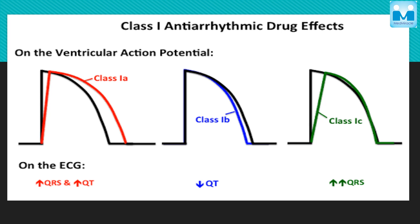This is what I was talking about — the class 1 anti-arrhythmics and the changes they bring to action potentials. You have to know this in detail because an image-based question can also come from this topic, asking something like: 'When drug A was administered, this change was noted — what is the likely drug?' So be thorough with the graphs.